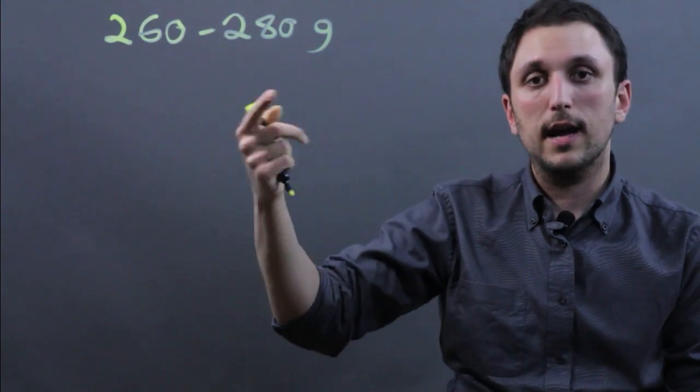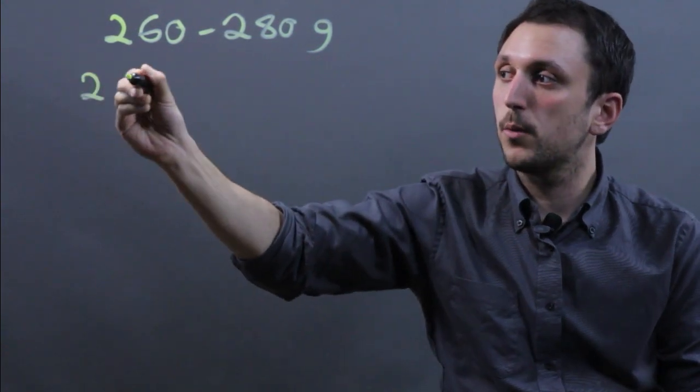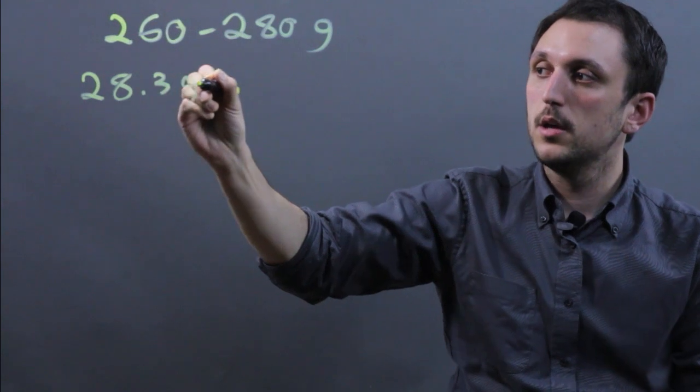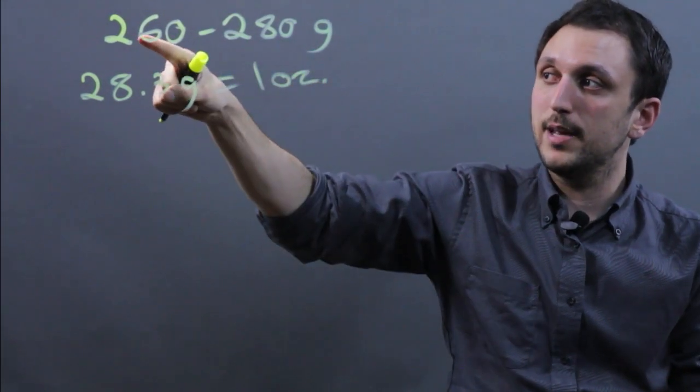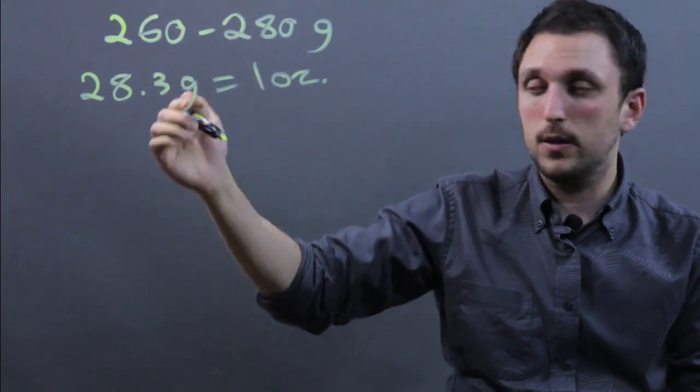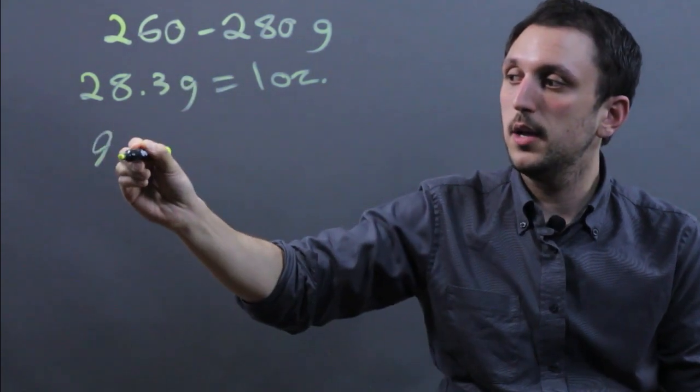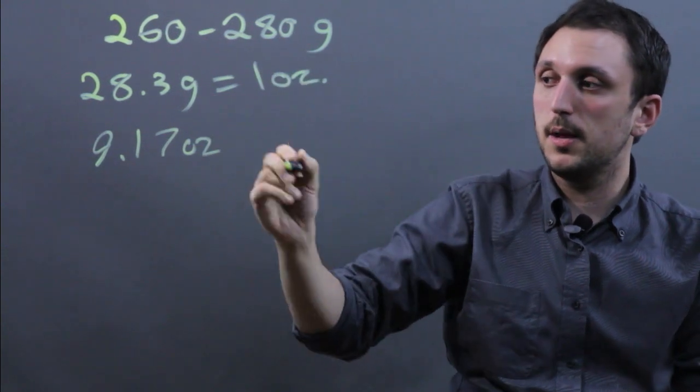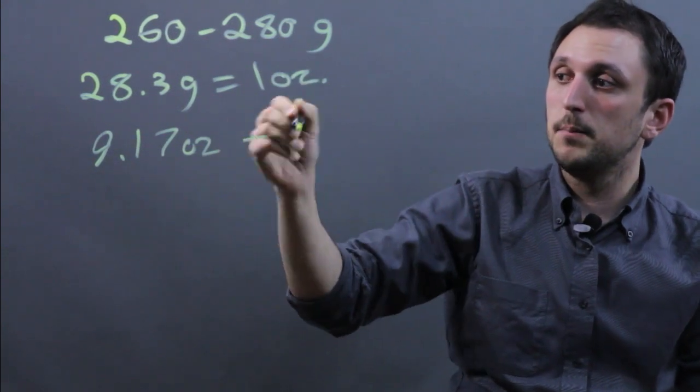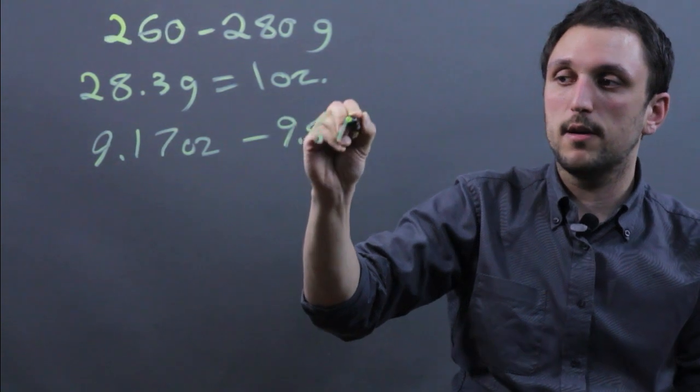Now to convert this to ounces, well 28.3 grams equals 1 ounce. Now we would basically say 260 divided by 28.3, which is roughly 9.17 ounces, and 280 divided by 28.3, which is roughly 9.87 ounces.